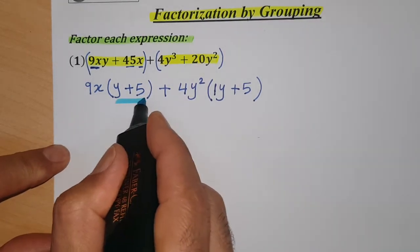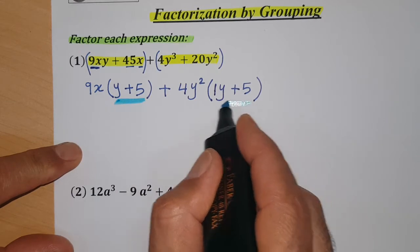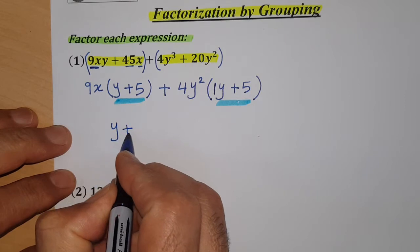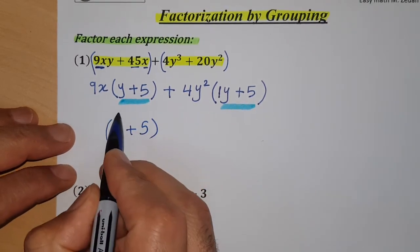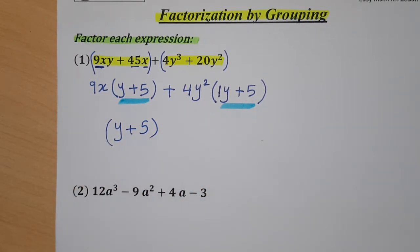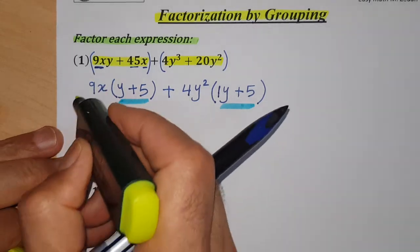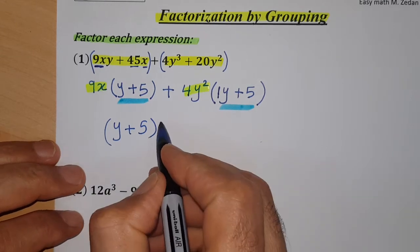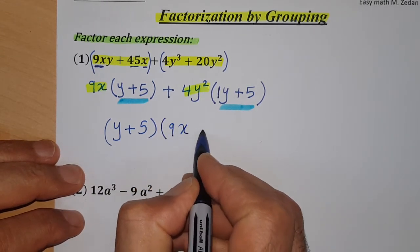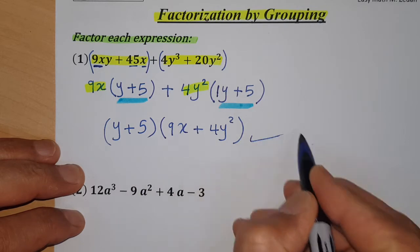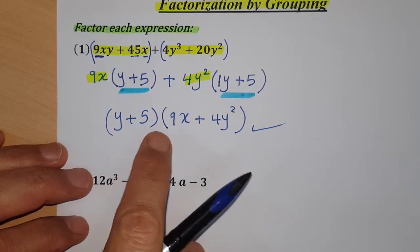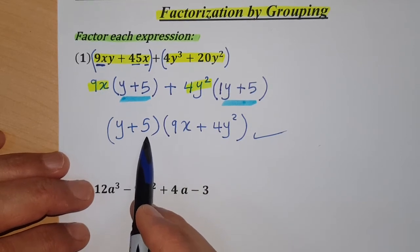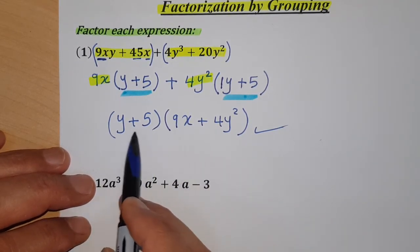Now look — the expression (y + 5) appears in both groups. So take (y + 5) outside as the common factor. The remaining terms inside the bracket are 9x and 4y². The original four-term expression is now written as a product of two expressions: (y + 5)(9x + 4y²).